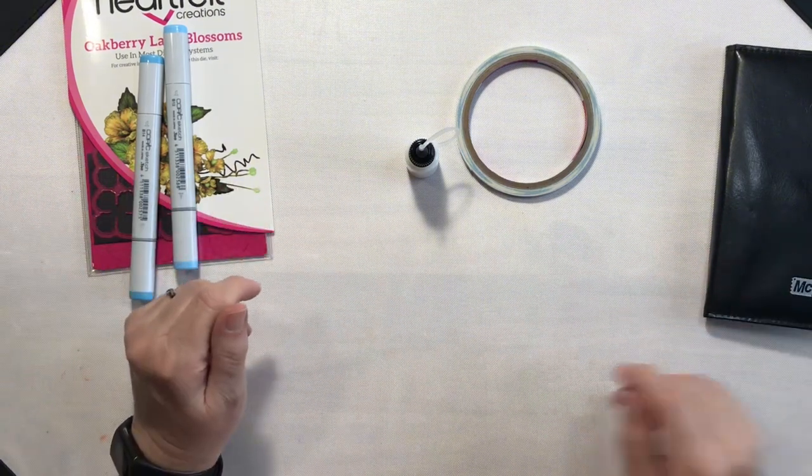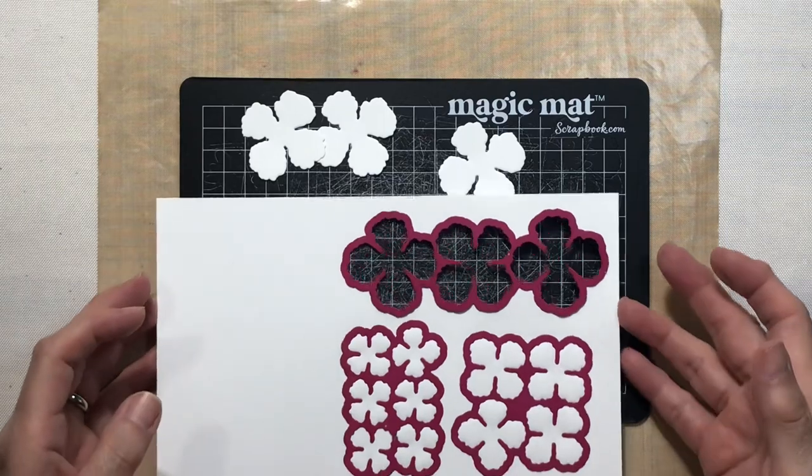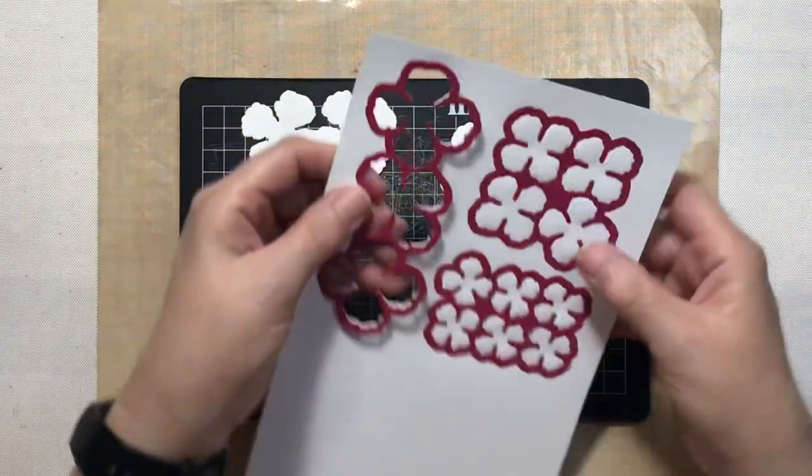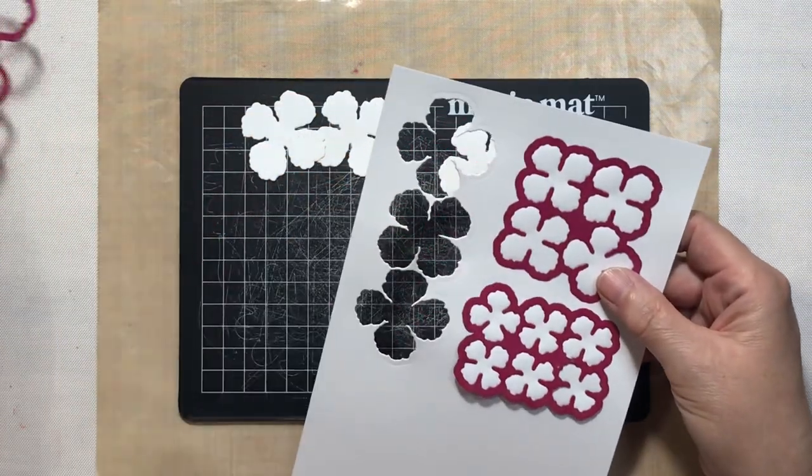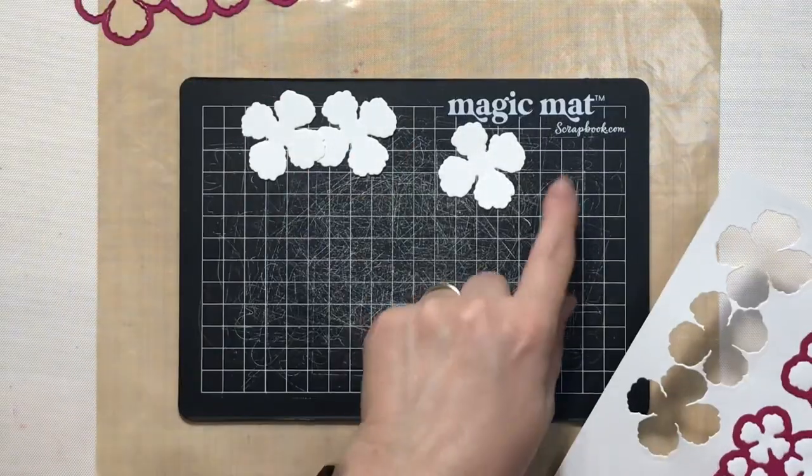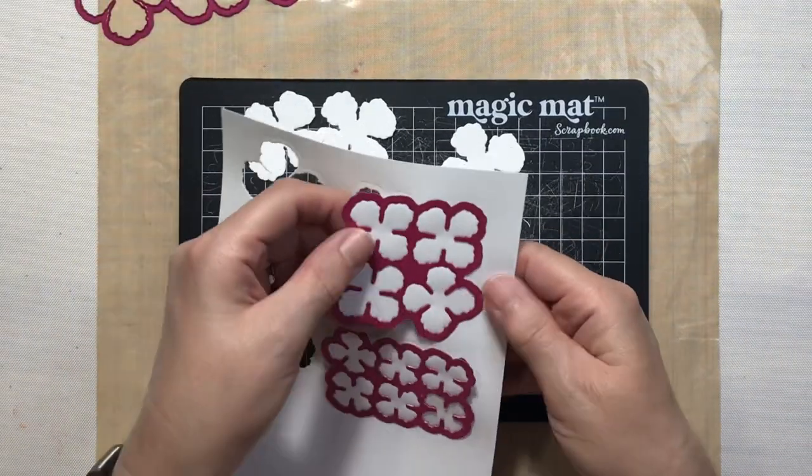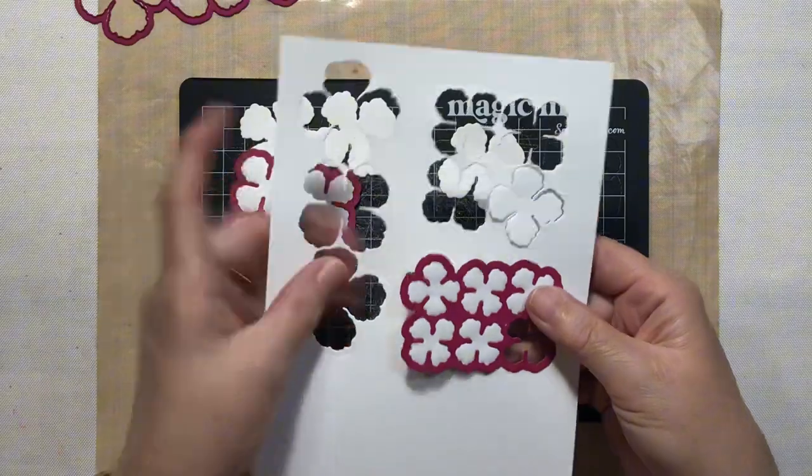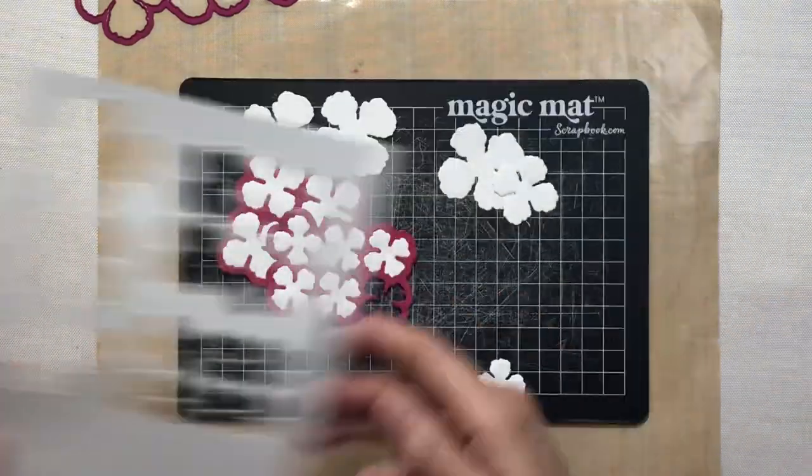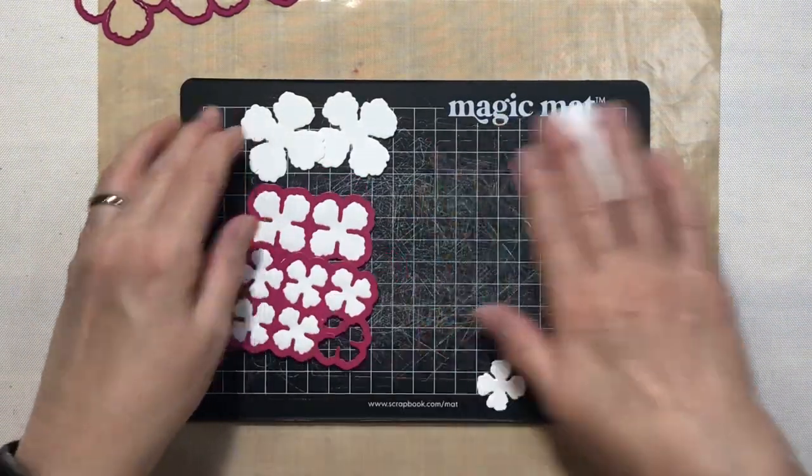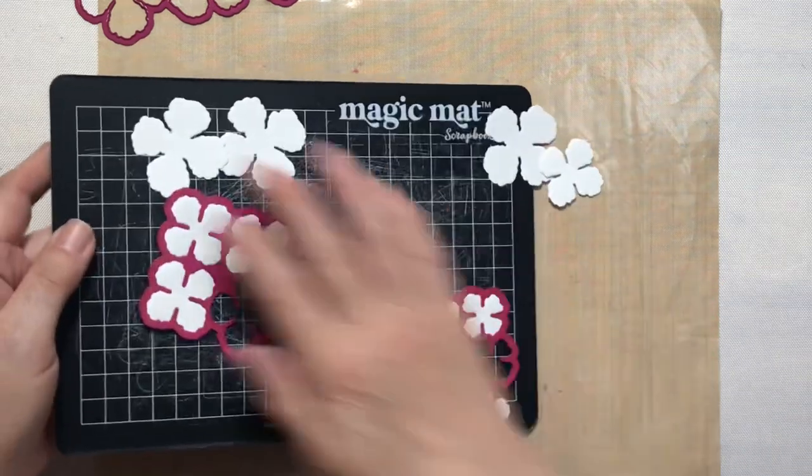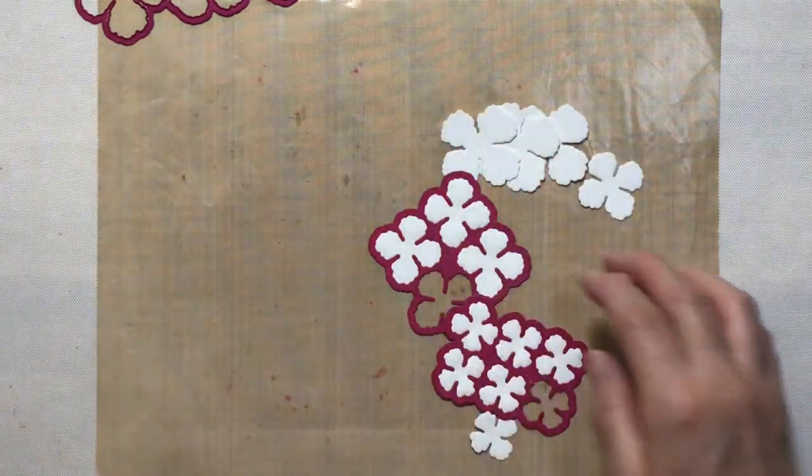So let's go ahead and get started. All right, I have all of my flowers cut with my Sizzix Big Shot as well as the scrapbook.com Magic Mat. So let's go ahead and get these popped out of here, and then we will start doing our coloring.